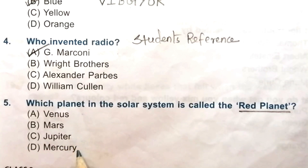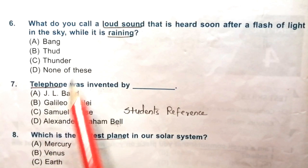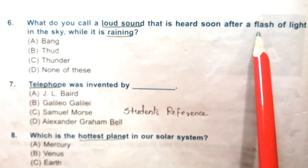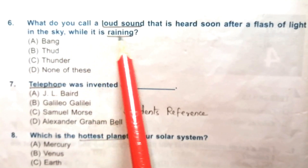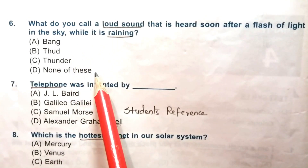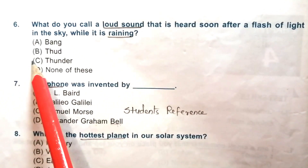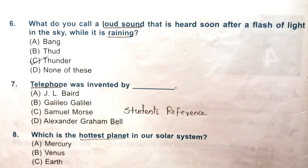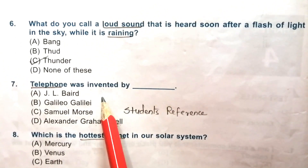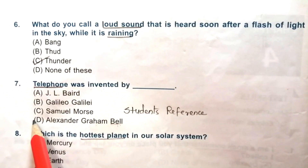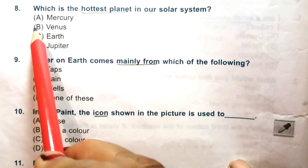Question 5: Which planet in the solar system is called the red planet? Venus, Mars, Jupiter, or Mercury. The answer is B, Mars. Question 6: What do you call a loud sound heard soon after a flash of light in the sky while it is raining? Bang, thunder, or none of these. The answer is C, thunder. Question 7: The telephone was invented by — the answer is D, Alexander Graham Bell.